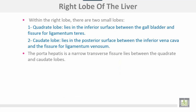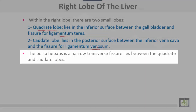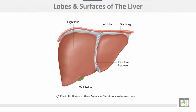Within the right lobe there are two small lobes. The quadrate lobe lies on the inferior surface between the gallbladder and the fissure for ligamentum teres. The caudate lobe lies on the posterior surface between the inferior vena cava and the fissure for ligamentum venosum. The porta hepatis is a narrow transverse fissure lying between the caudate and quadrate lobes.